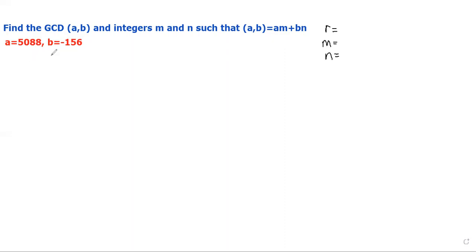The first part of the Euclidean algorithm is we're going to use the division algorithm to get started. So we take A, which is 5088, and set it equal to some quotient times negative 156. We ask ourselves: how many times does negative 156 go into 5088? I did this before recording. My first guess was 30. If we take 156 times 30, we get 4680 — not quite.